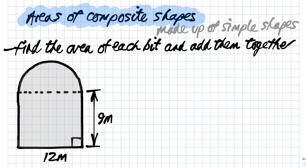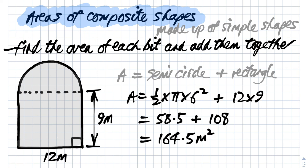When it comes to composite shapes, we basically just find the area of each bit and add them together. Here we're going to find the area of the semicircle and the area of the rectangle. The radius of this semicircle is 6, so we get half times pi times 6 squared. And the rectangle is 12 by 9. When we calculate it out, we end up with 164.5 meters squared.